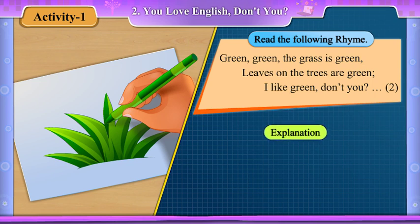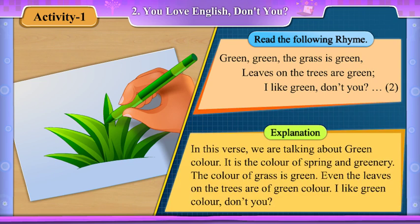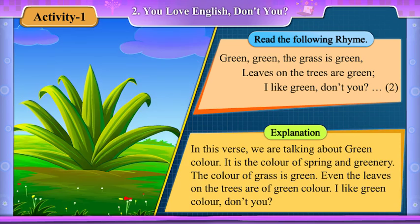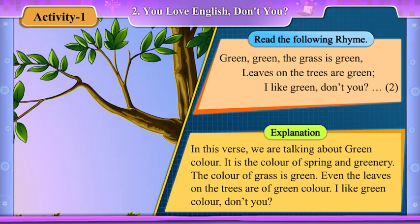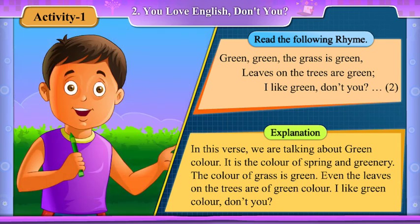Explanation. In this verse, we are talking about green colour. It is the colour of spring and greenery. The colour of grass is green. Even the leaves on the trees are of green colour. I like green colour, don't you?